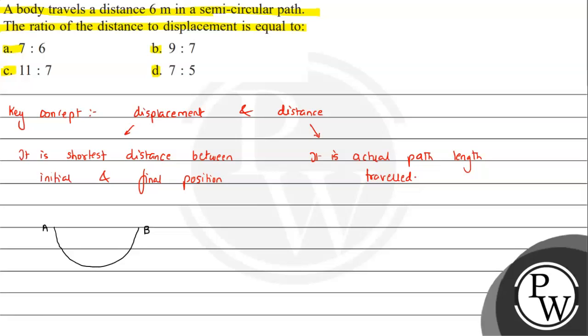So from A to B, how much will actually be traveled? It will follow this path. This is the path actually followed. So this is 6 meters.